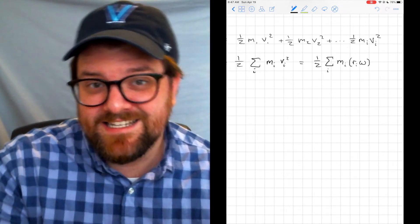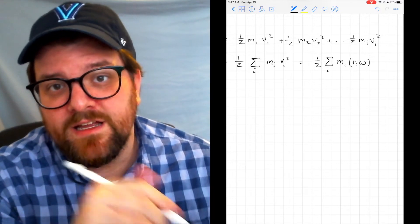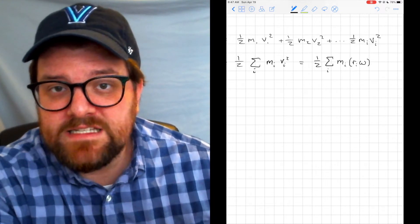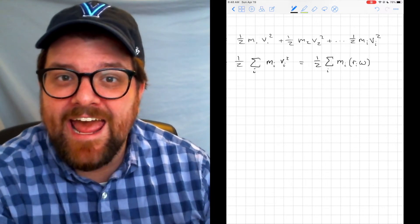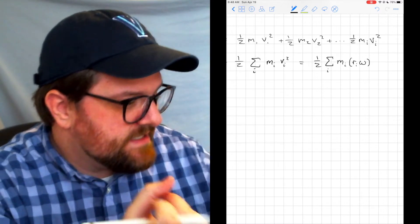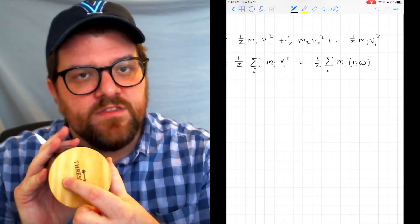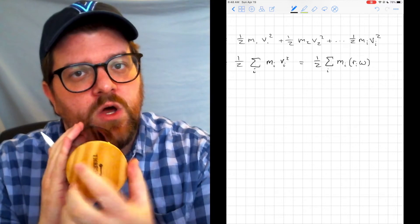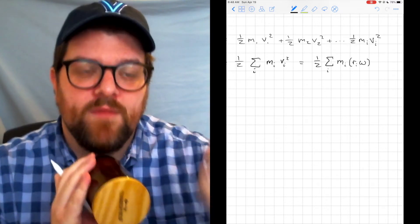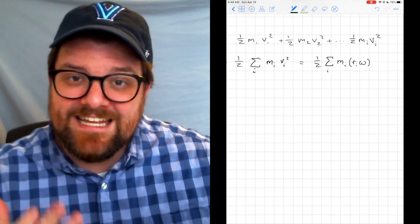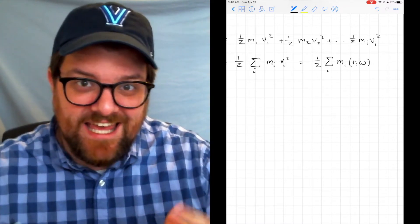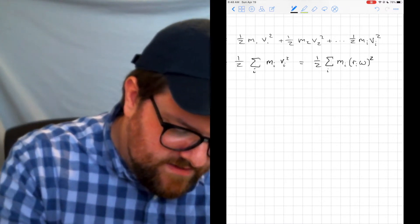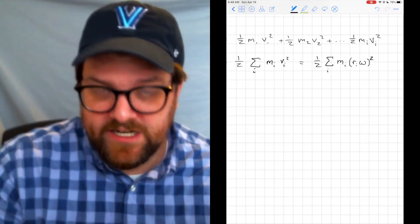And omega is going to be constant. That's the beauty of using omega. Omega is going to be constant no matter where I am in this object. Whether I'm near the center of rotation here or whether I'm all the way at the end, I have the same omega. The radius Rᵢ is what scales to get Vᵢ, and that whole quantity is squared.